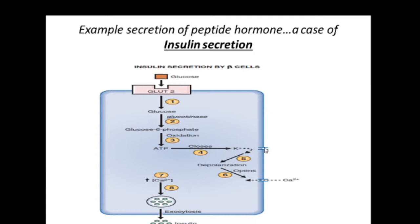Closing the potassium channel causes the pancreatic beta cell to become depolarized. Depolarization is a situation where there is an increase in electropositivity inside the cell compared to outside. Depolarization opens the voltage-gated calcium channel, and there is rapid influx of calcium into the pancreatic beta cell. The increase in calcium causes calcium to interact with the vesicles containing insulin, causing exocytosis.